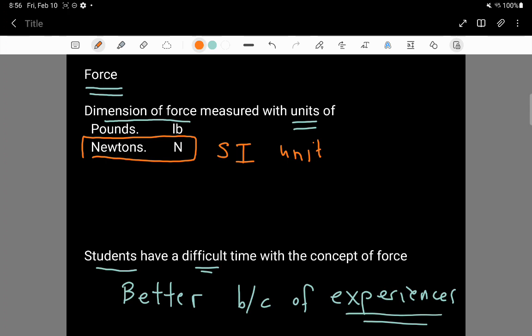The reason why this unit is useful is because it is actually composed, it's a composite, of other units that you already know. It turns out that one newton of force is equal to one kilogram of mass times one meter per second squared of acceleration.